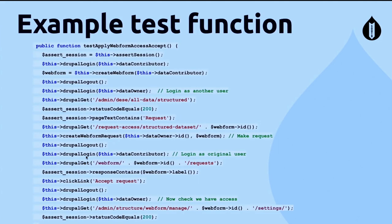Here's one of the test functions: it tests for a successful request to access a web form. First, the data contributor logs in and creates a web form, then logs out. We log in as data owner, check we have access to the dashboard, and verify the text 'request' appears on the page. We run a function to make a request to the web form and log out. Then we log in as data contributor, navigate to the request page, check we're in the right place, and click accept request. Finally, we log in as data owner and check we now have administrator access.